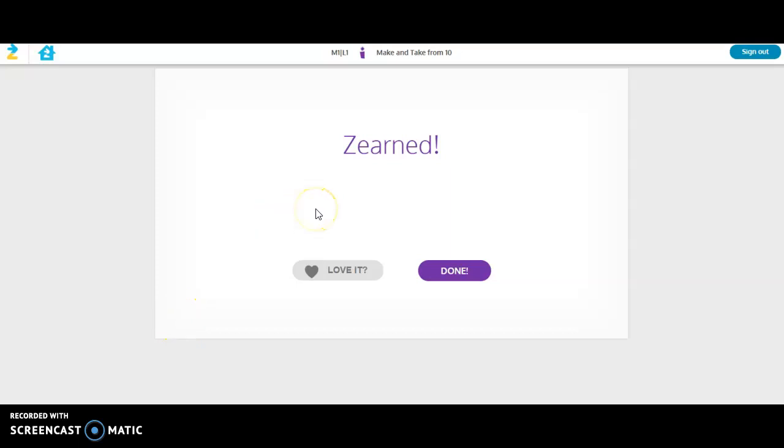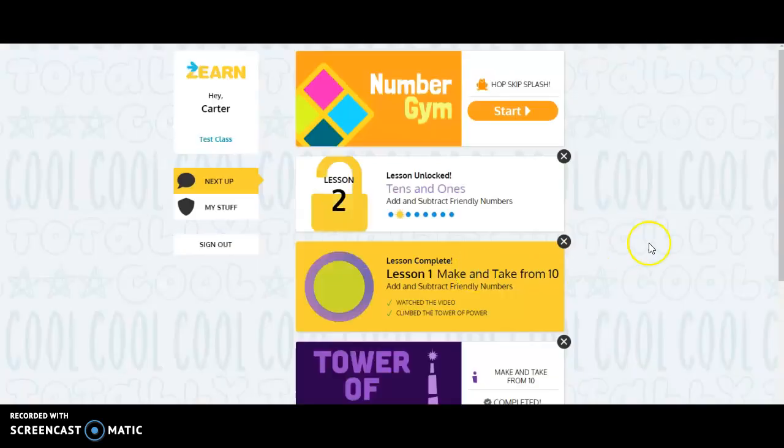Again once you finish the Tower of Power you can click love it and click done and it will take us on to the next screen. So you can see here that you unlocked another lesson. Lesson 2 would be for the next day.